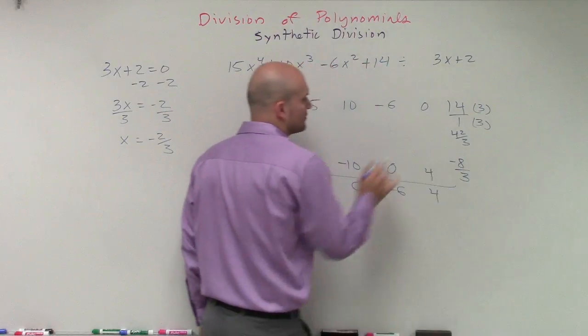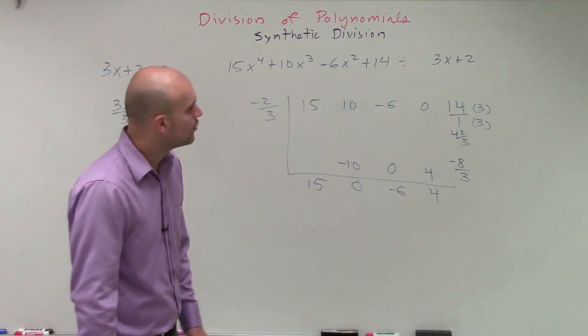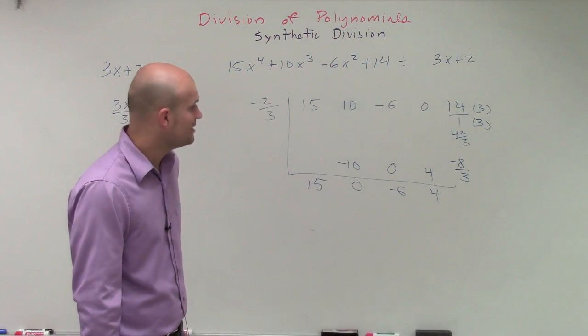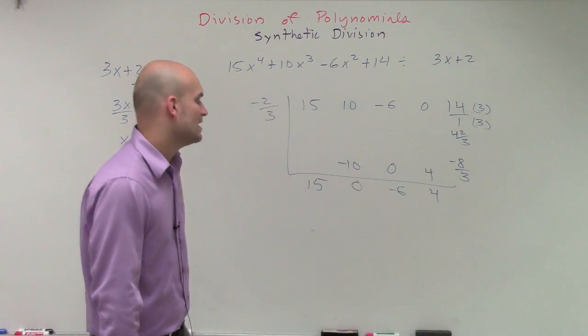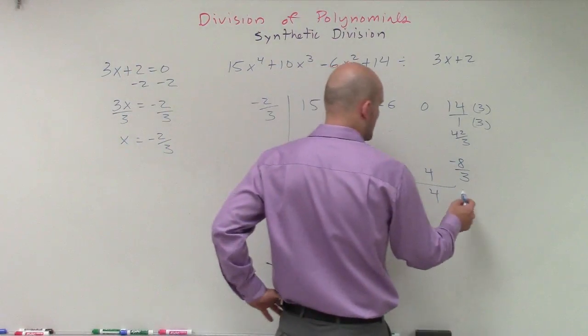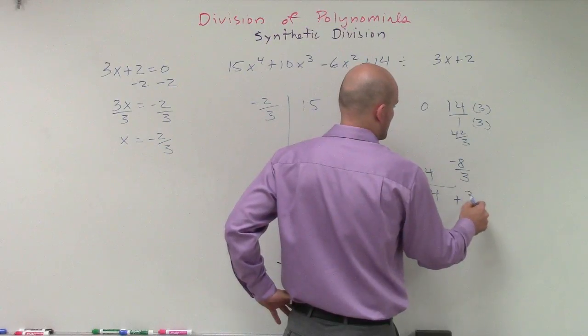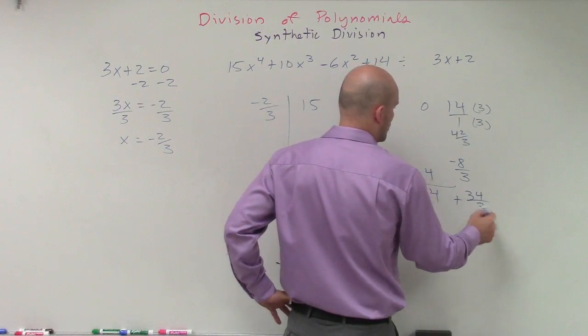So 42 over 3 plus a negative 8 over 3 is going to be positive 34 over 3.